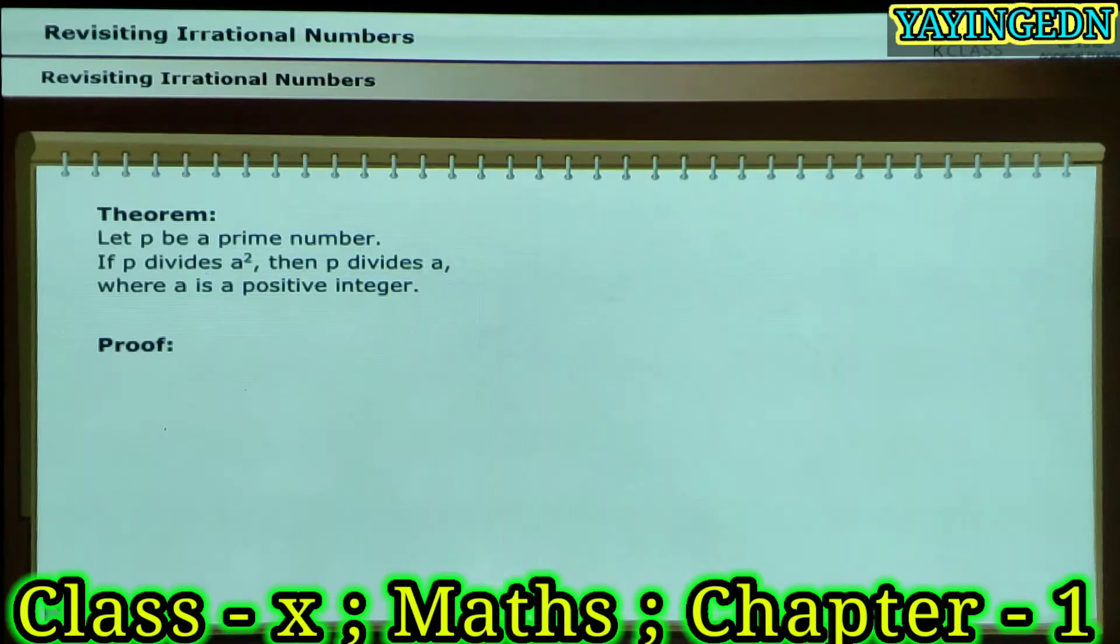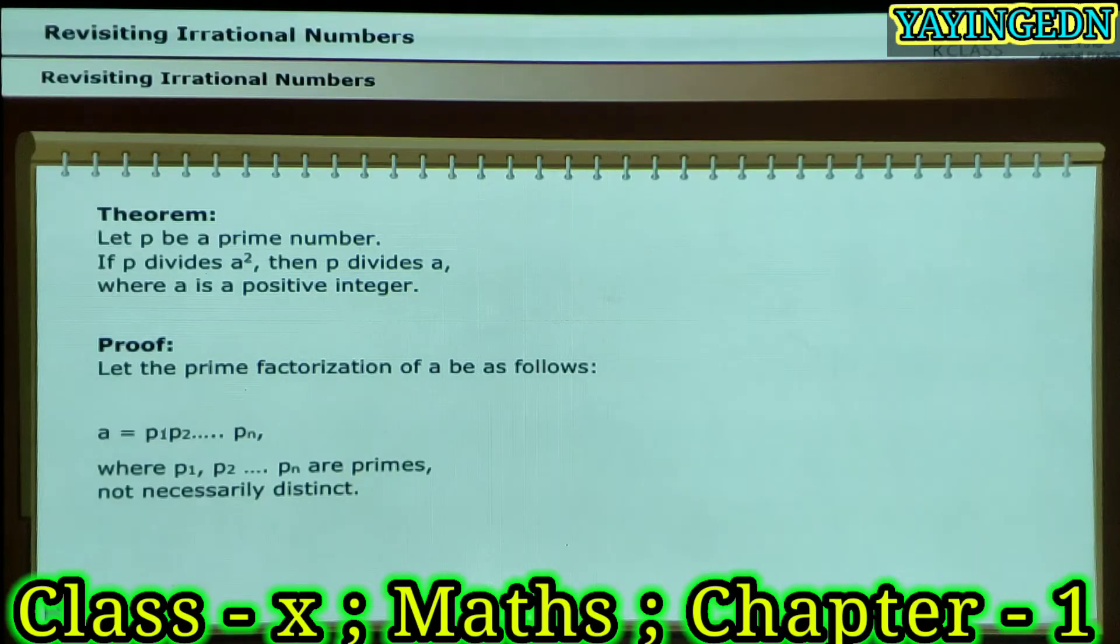This is how we proceed with the proof. Let the prime factorization of A be as shown. On squaring both the sides, we get the following.